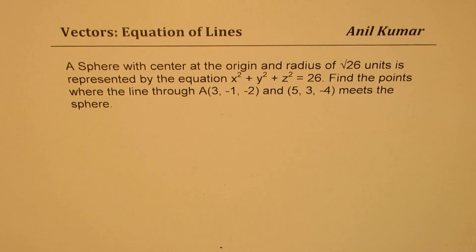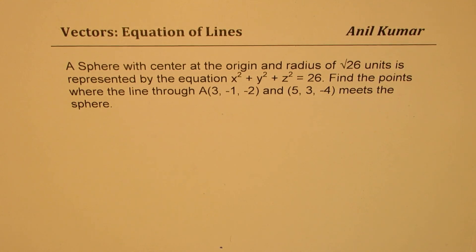The question here is: a sphere with center at the origin and radius of square root of 26 units is represented by the equation x squared plus y squared plus z squared equals 26. Find the points where the line through A(3, -1, -2) and B(5, 3, -4) meets the sphere.